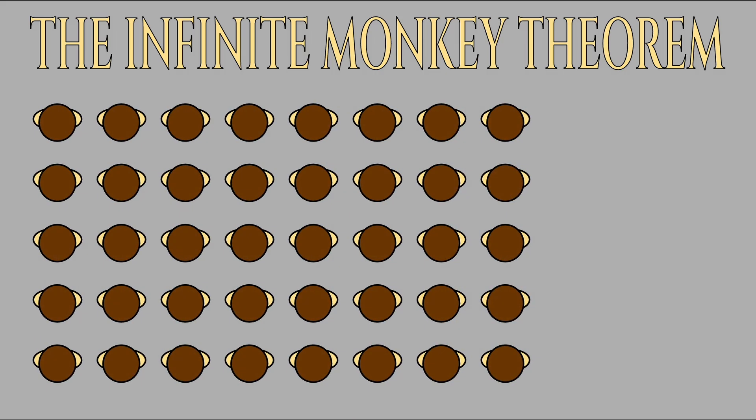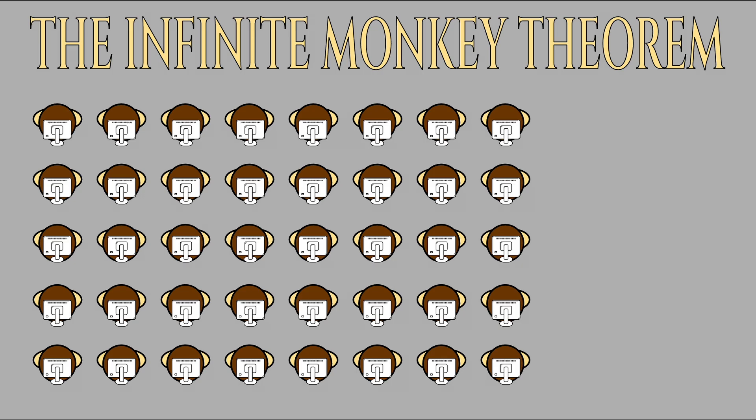When I was first learning probability, my teachers tried explaining the concept of guaranteed outcomes via the infinite monkey theorem. Colloquially, this describes the concept of how, if an infinite amount of monkeys were given an infinite amount of time to randomly type letters, they would eventually produce the collective works of Shakespeare.